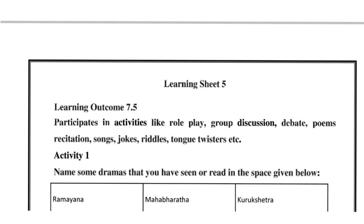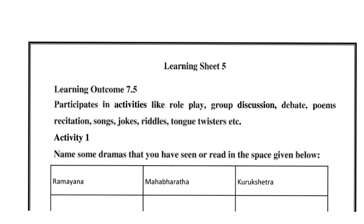Learning Outcome 7.5 involves participating in activities like role play, group discussion, debate, poems, recitation, songs, jokes, riddles, and tongue twisters.